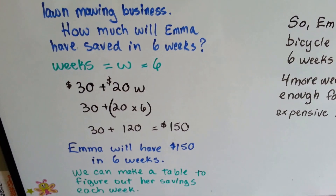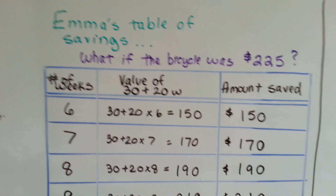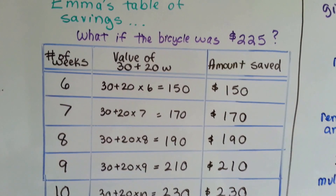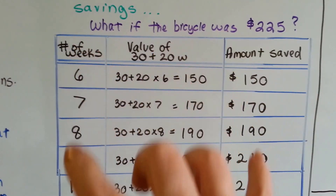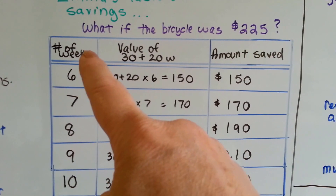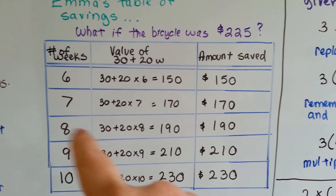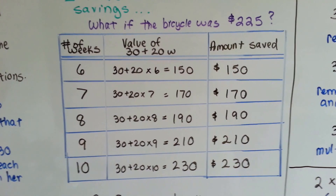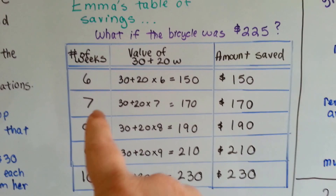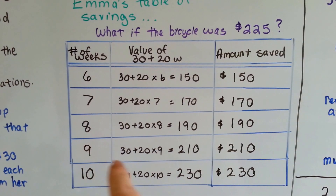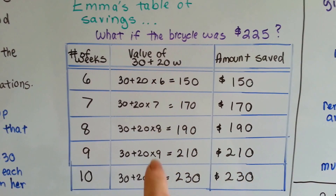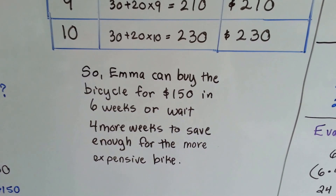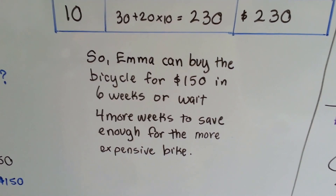We can make a table to figure out her savings each week. What if there was a bicycle for $225 and at 6 weeks she had $150 saved? We could make a table to figure out how many weeks it'll take to get to $225, or to keep track of her savings. The table has a number of weeks going down — 6, 7, 8, 9, 10 — and the value of the expression 30 plus 20W, showing her amount saved each week. After filling out the entire table, we see that at 10 weeks she'll have $230. So she can buy the bicycle for $150 in 6 weeks or wait 4 more weeks to save enough for the more expensive bike.